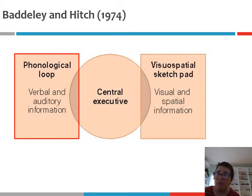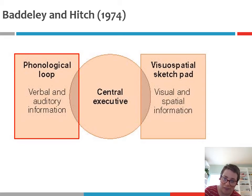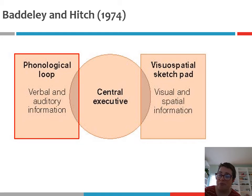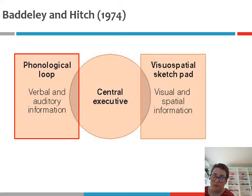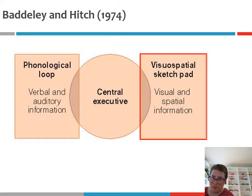Anytime you're trying to remember any verbal or auditory information — such as a person's phone number or what your cognitive psychology professor is telling you in a lecture video — that information is going to be stored by the phonological store and rehearsed by the articulatory rehearsal mechanism. Collectively, the phonological store and the articulatory rehearsal mechanism make up the structure known as the phonological loop.